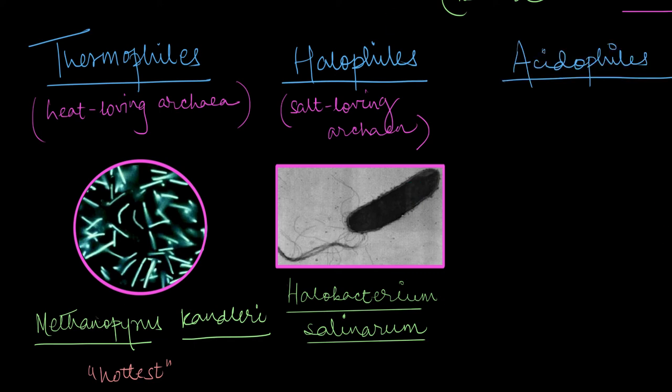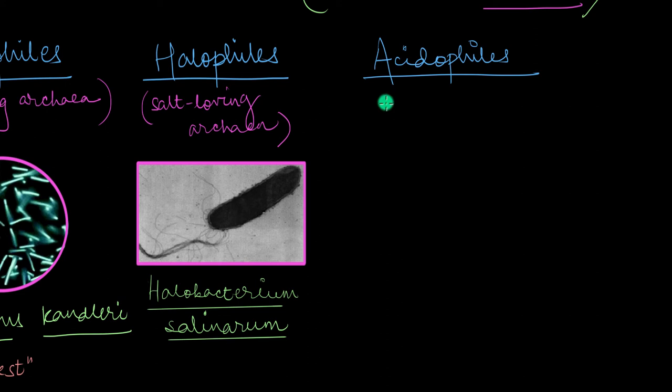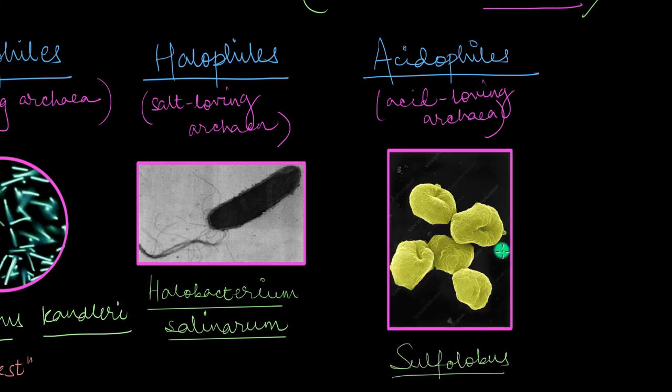Then we have the acidophiles, or acid loving archaea. Think of those sulfur springs which are teeming with sulfuric acid. We'd probably give ourselves a burn if we accidentally dip our hands in it. But these acidophiles, well, they love that. Not the burning, of course, the acidic environment. One such acid loving archaea is the species sulfolubus.